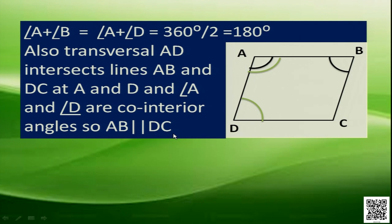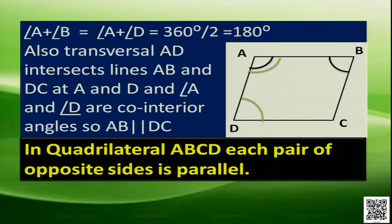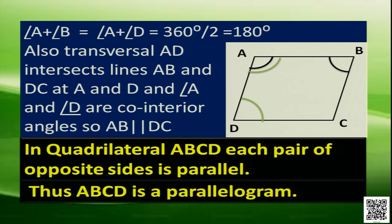As we know, in a quadrilateral, if opposite sides are parallel, then that quadrilateral is a parallelogram. In quadrilateral ABCD, each pair of opposite sides is parallel, so ABCD is a parallelogram. By using these two properties we can solve some questions.